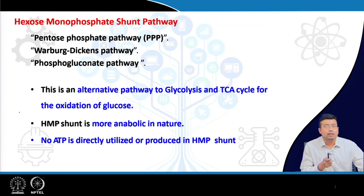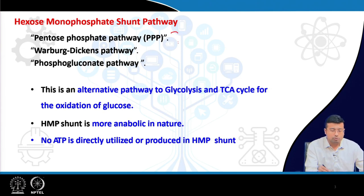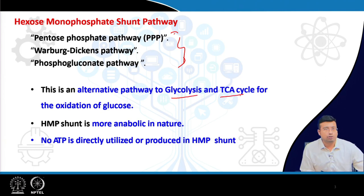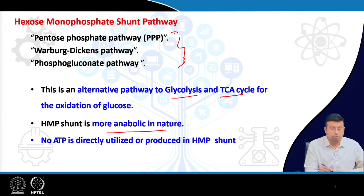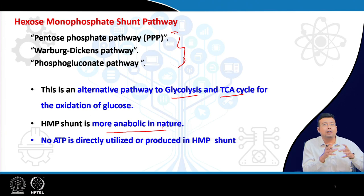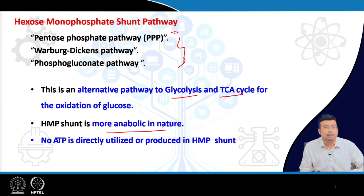You already remember from the last class this is known as either pentose phosphate pathway, Warburg pathway, or phosphogluconate pathway. The importance is that it is an alternative pathway to glycolysis and TCA cycle for oxidation of glucose. The HMP shunt is actually more anabolic in nature, and knowing whether a pathway is anabolic or catabolic will help us predict how it is regulated.